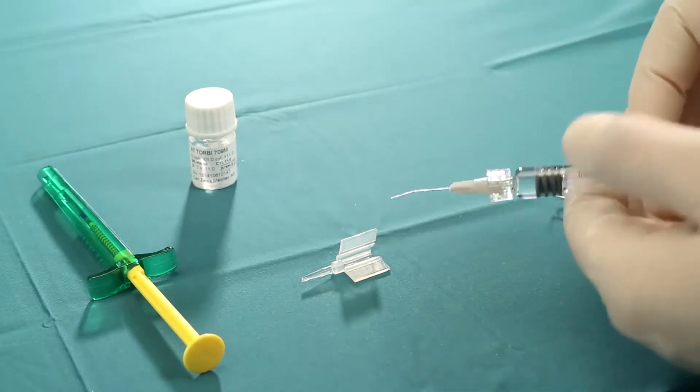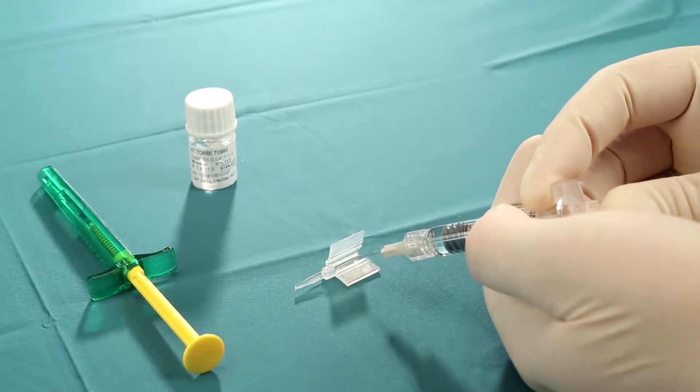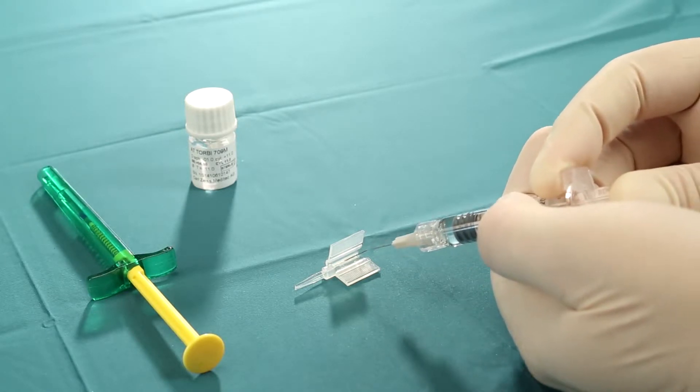How to prepare Zeiss IOLs for use with the Viscoject injector. Place a small amount of OVD in the cartridge tip. Place a line of OVD in each channel of the cartridge.